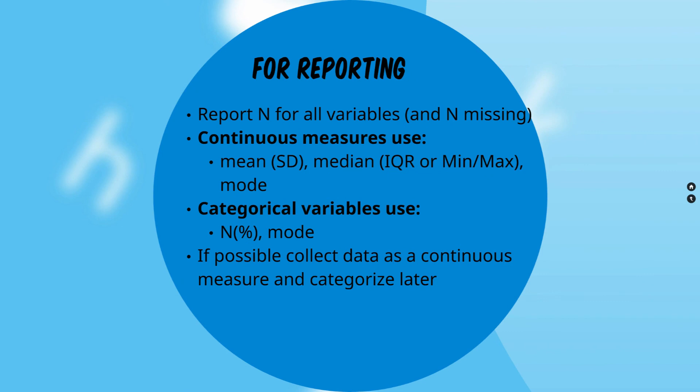For reporting, report N for all variables and N missing if applicable. Continuous measures use the mean and standard deviation, or the median with the interquartile range or minimum and maximum. You can also report the mode — the most common response. For categorical variables, always report N and percent, and you can report the mode — the most common level given. If at all possible, collect data as continuous measures and then categorize it later.